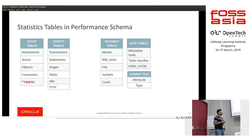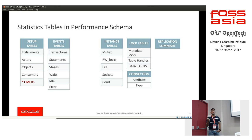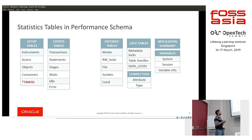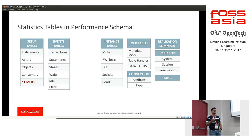We have connection attributes tables showing the type of connection, replication summary tables — previously we used SHOW SLAVE STATUS to get replication status, but all that information has been imported into Performance Schema as of 5.7. We also have tables for system and session variables, and other tables like threads and more.